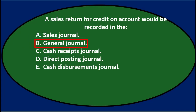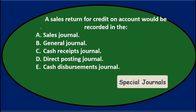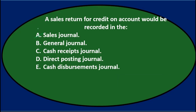B says the General Journal. That's what we use when we can't find a special journal to record a transaction. So if we can't find a special journal, we default to the General Journal, which would just record debits and credits for the transaction.